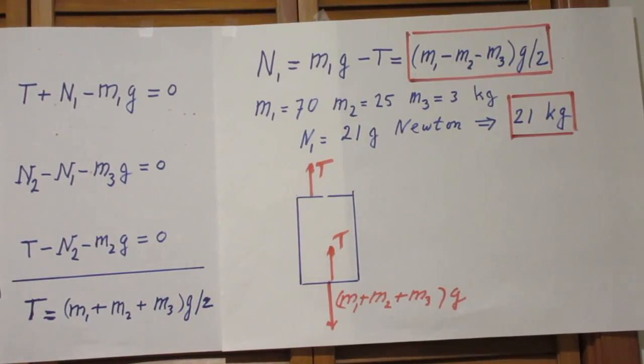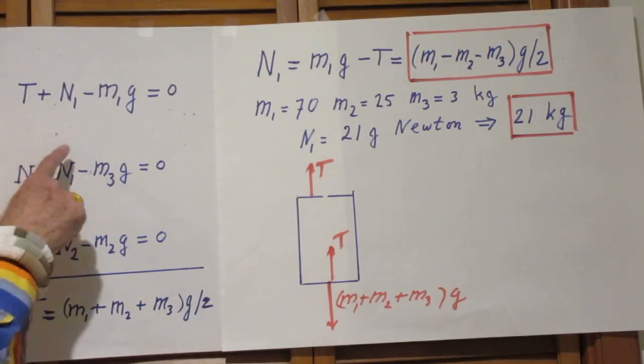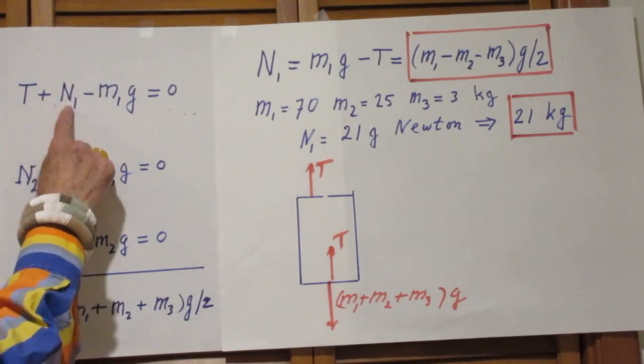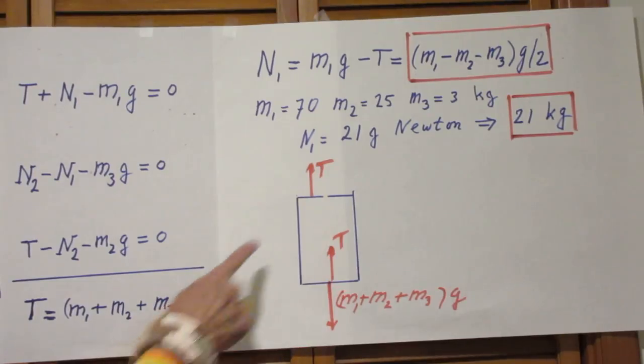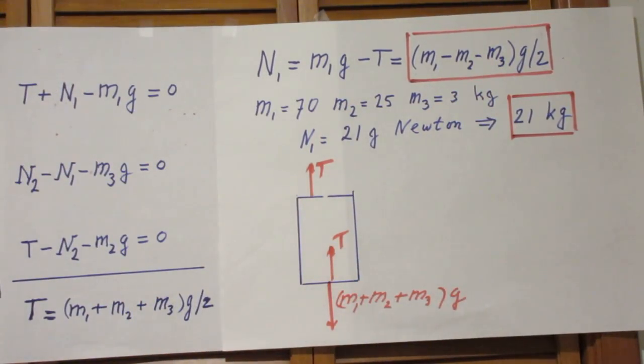So we substitute t in the first equation for the person. So we substitute this value for T in here. And that gives us that N1, which is really the one we want to know, is m1g minus T. And if you substitute T in here, this is your answer. So the final answer is that the force in newtons onto the scale is m1 minus m2 minus m3g divided by 2. And that is what the scale will read if the scale were calibrated in newtons.